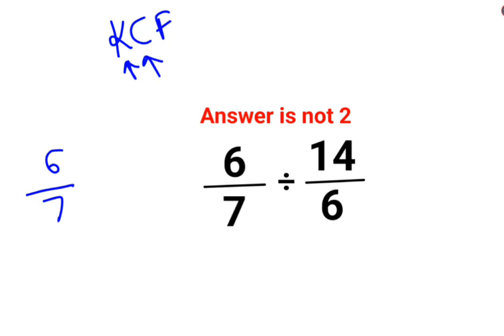C stands for changing the division sign to multiplication. F stands for flipping or taking reciprocal of 14 upon 6 which is 6 by 14.